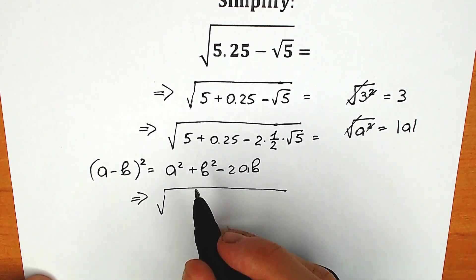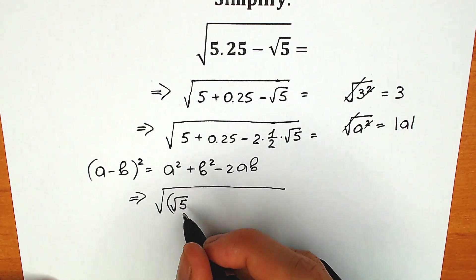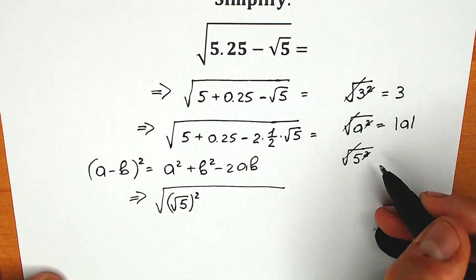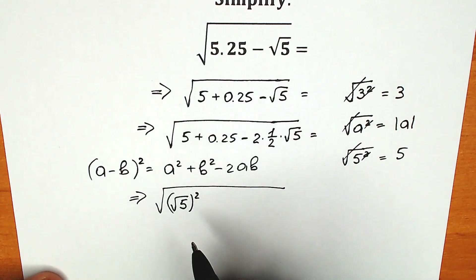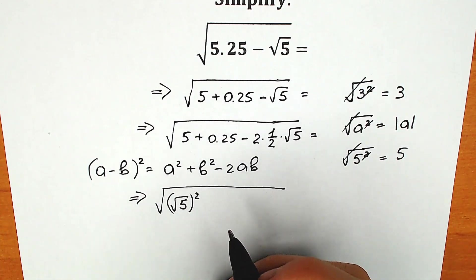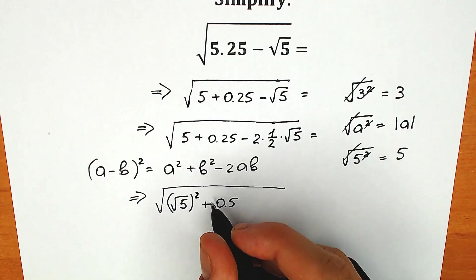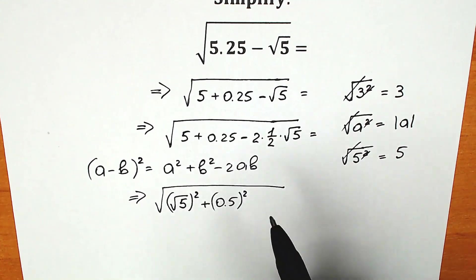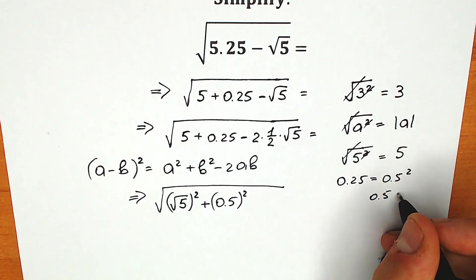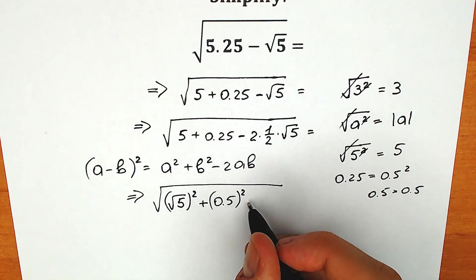First of all, instead of this 5, let's write (√5)² — square root of 5 to the second power. We can easily do this because (√5)² equals 5, so it changes nothing. And this 0.25 — the best way to express it is as 0.5 to the second power, because 0.5 × 0.5 = 0.25. So we can easily express 0.25 like that.